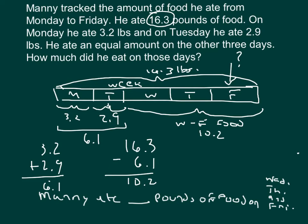And then we will subtract that from the 16.3 to get 10.2 pounds of food that he ate from Wednesday through Friday. As you see from the diagram, all we need to do then, is to take 10.2, which is the amount of food that he ate from Wednesday to Friday, and divide it by 3. Because he ate an equal amount each of those days.